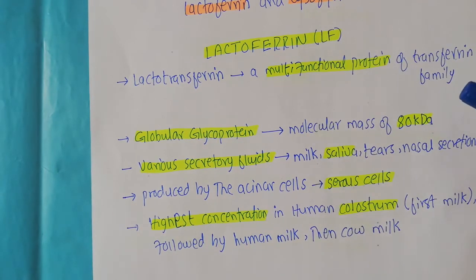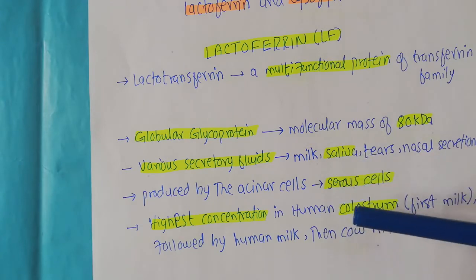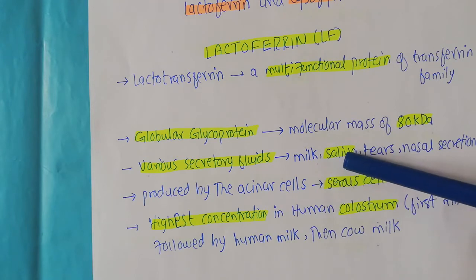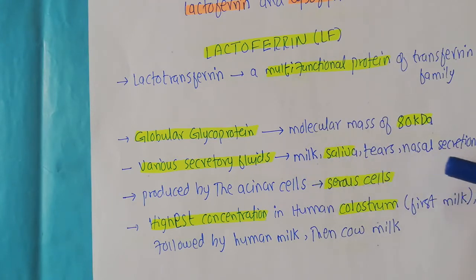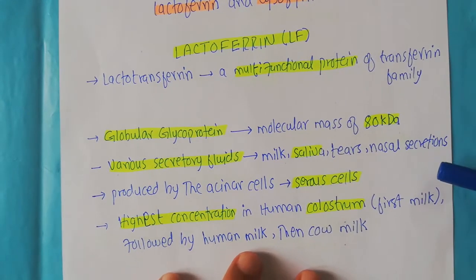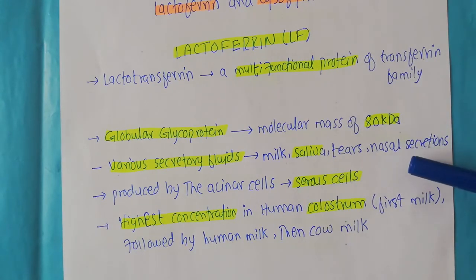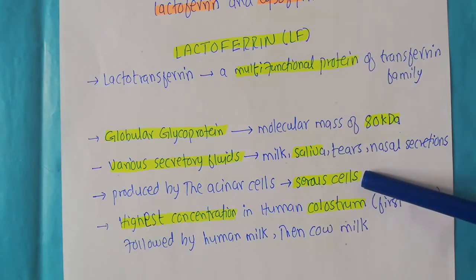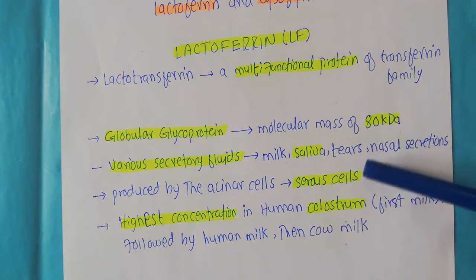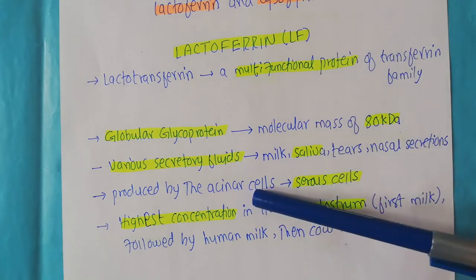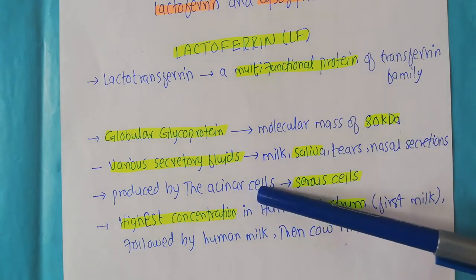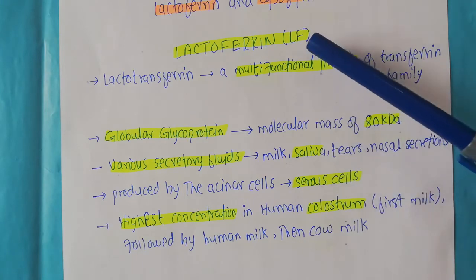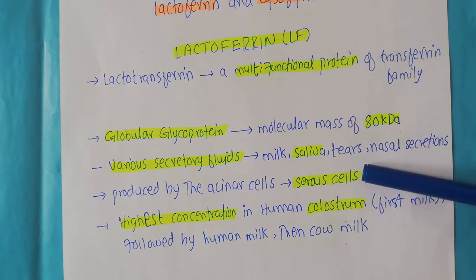Lactoferrin is present in various secretory fluids in the human body, including saliva, milk, tears, and nasal secretions. These lactoferrin proteins are produced by specialized secretory cells known as serous cells. As mentioned in the first video of this series, secretory cells are of two types, and lactoferrin is produced specifically by the serous cells.